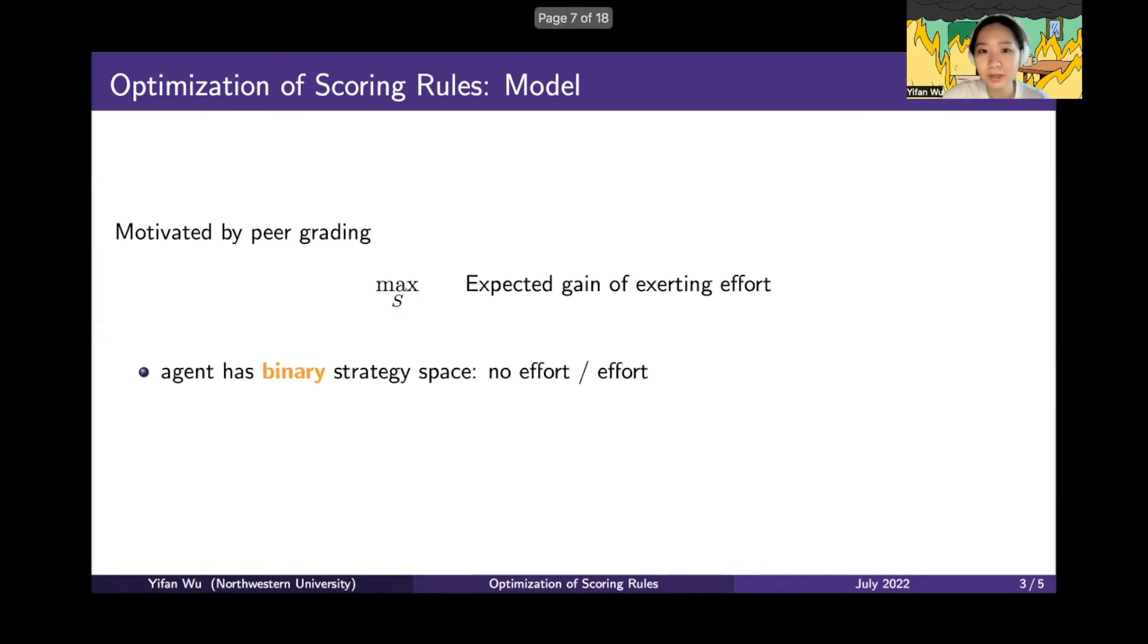We want to maximize the expected gain of exerting effort. In our model, we assume the agent has binary strategy space, either exerting effort or not exerting effort. We focus on eliciting the marginal mean of the agent's belief distribution, which can be an n-dimensional vector.